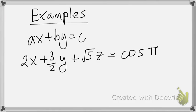Notice here that cosine of pi is the constant term even though it has the trig function cosine in it.